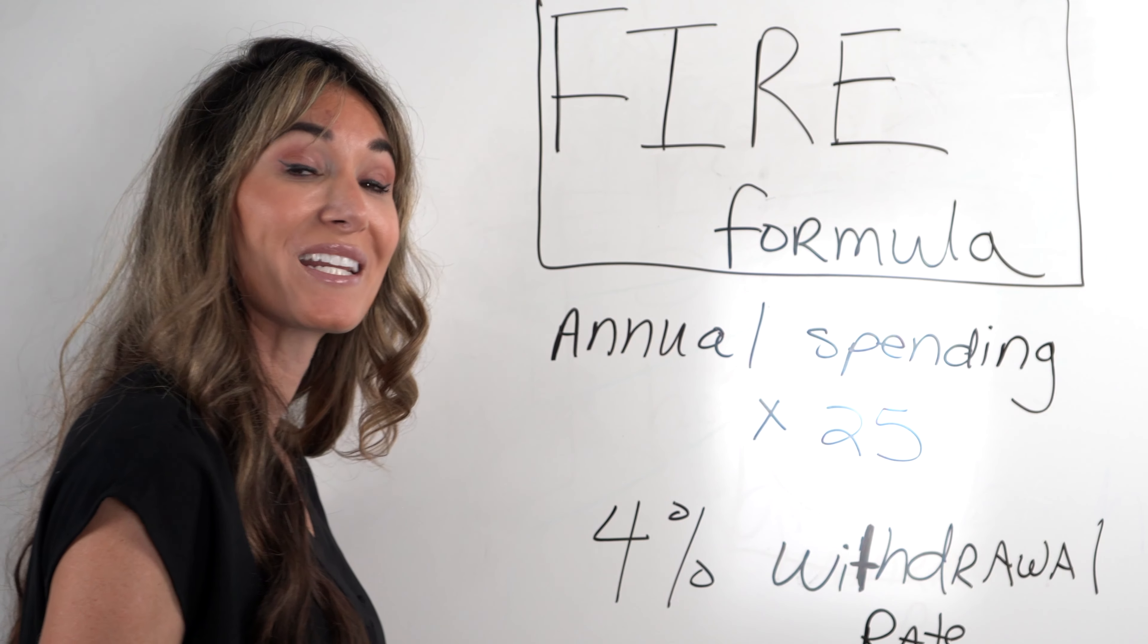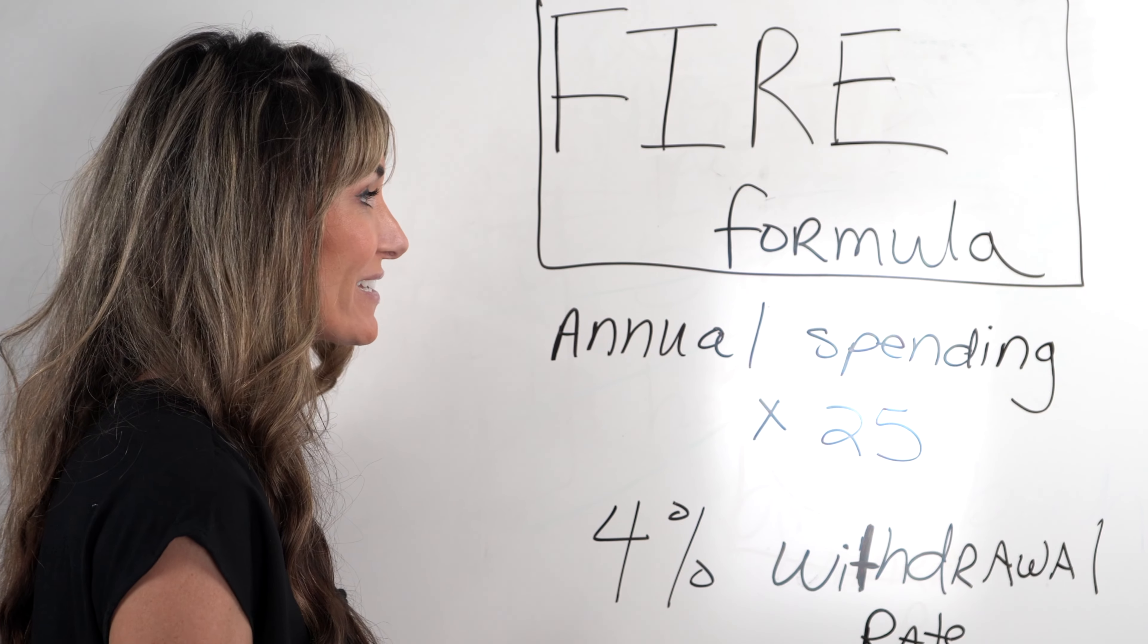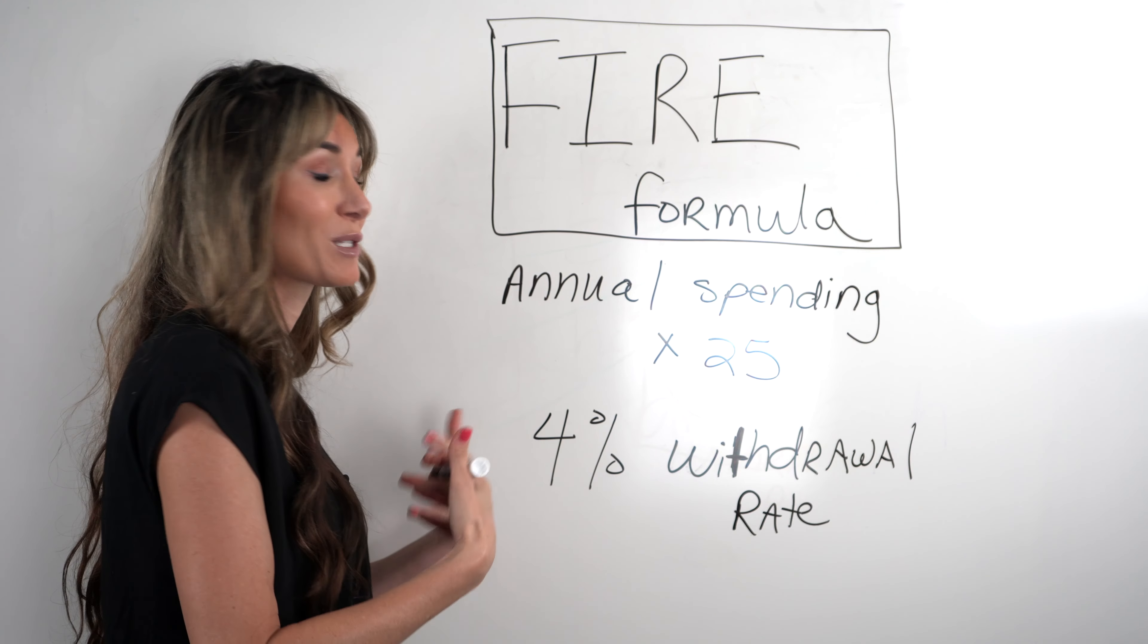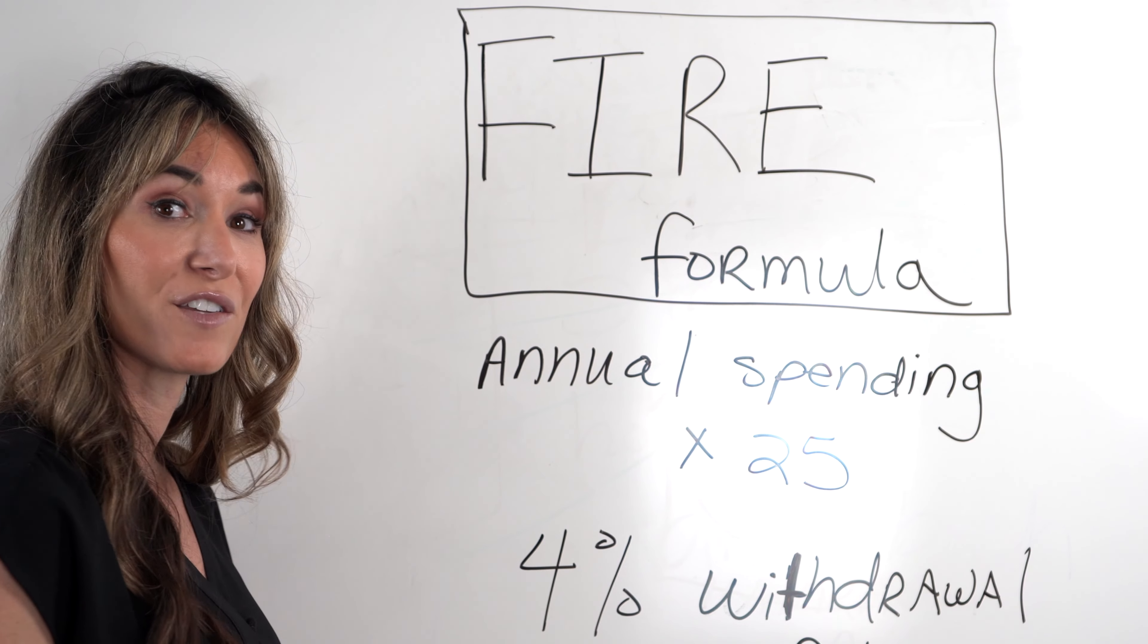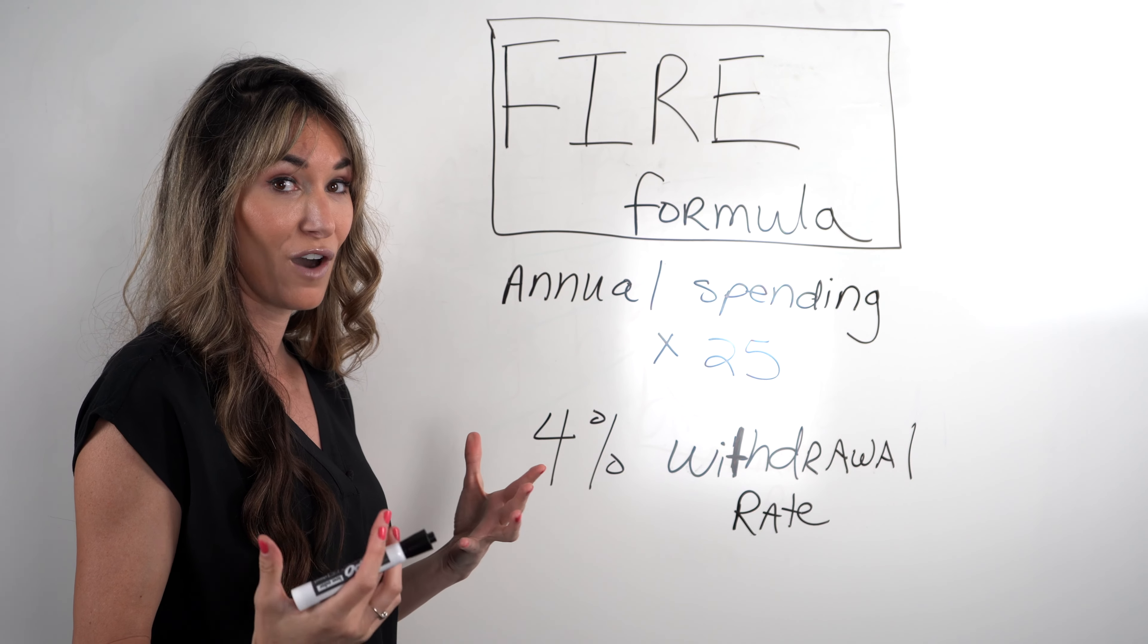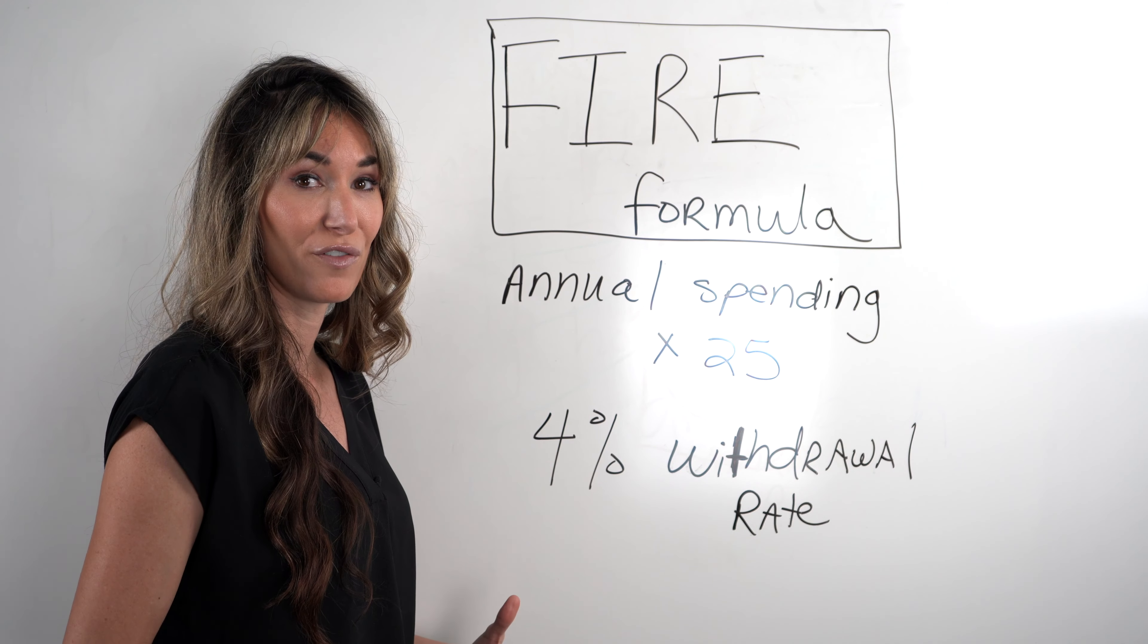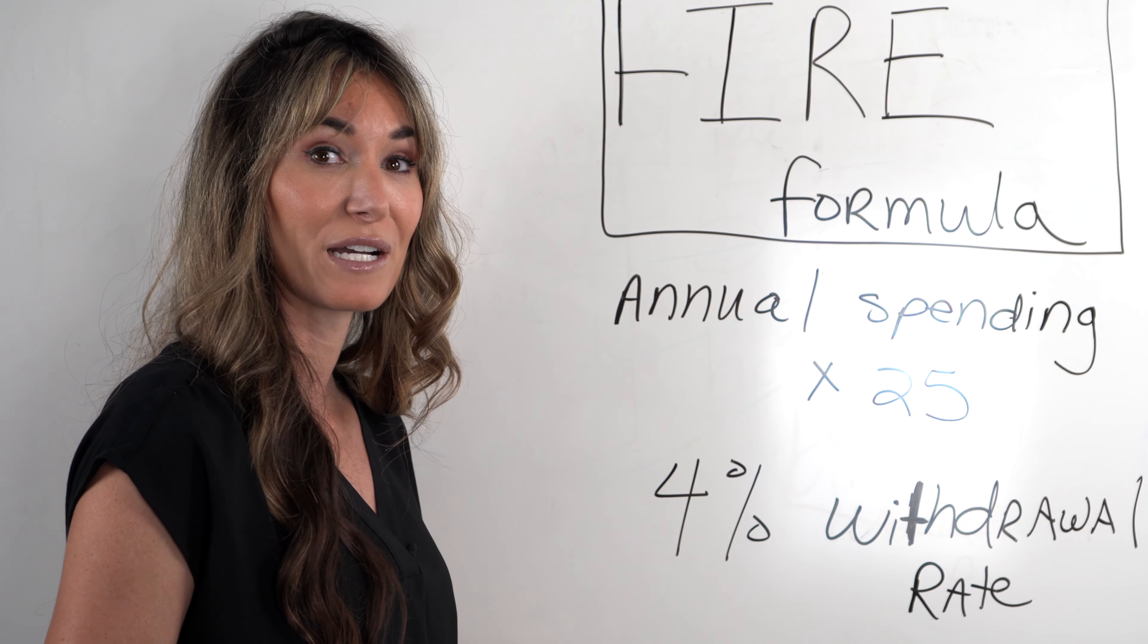So first things first, when we talk about getting you to FIRE, it's really important that you understand what your FIRE number is. The generally accepted formula is this: We want to understand what is your annual spending, what am I going to spend on a yearly basis? We take that number and times it by 25. That is the amount of savings and investments that you'll need to have to be able to live off of with a withdrawal rate of 4%.